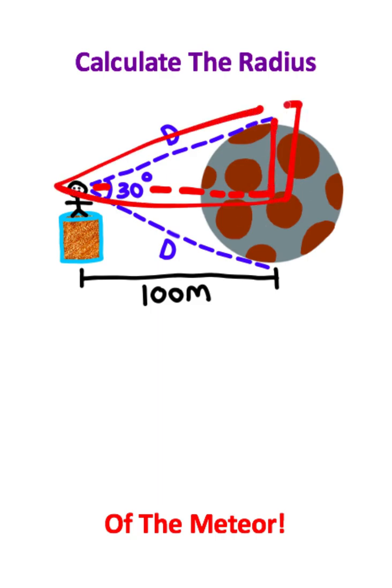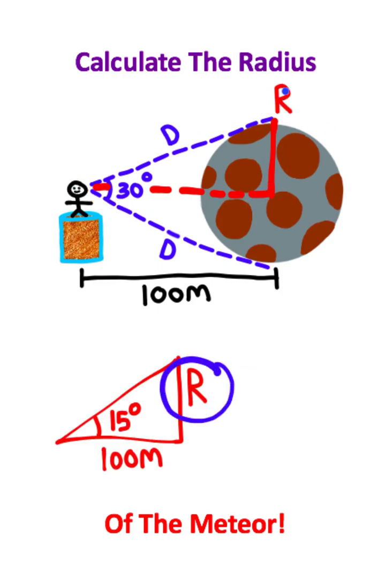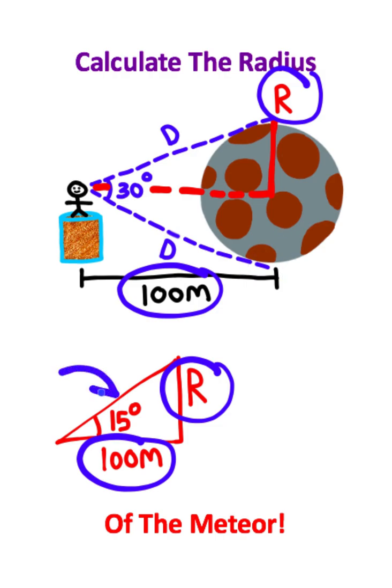Notice that this gives us a small right triangle here, where the opposite side of this triangle is the radius. The adjacent side of this triangle is the 100 meter radial distance to the meteor. And this 15 degree angle comes from the fact that we took this 30 degree angle and cut it in half to make this right triangle.